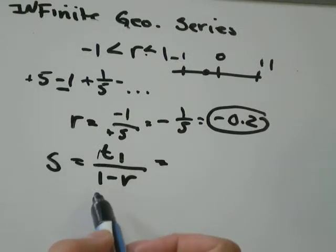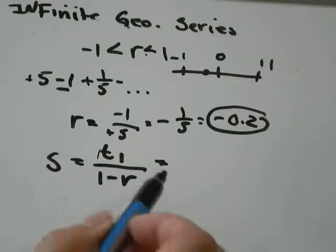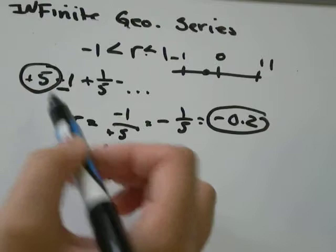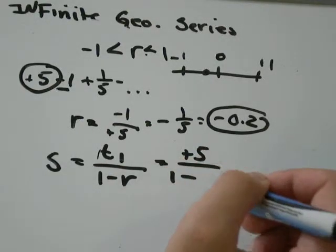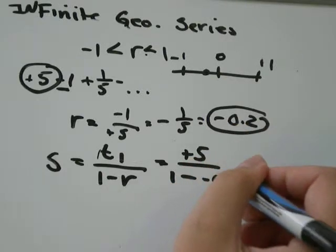You might see T1 expressed as A instead. I would just keep it as T1 because I won't be able to remember what A stands for. So that would not help me at all. The first term in this sequence, sign matters. It's positive 5, 1 minus R. We found the common ratio was negative 0.2.